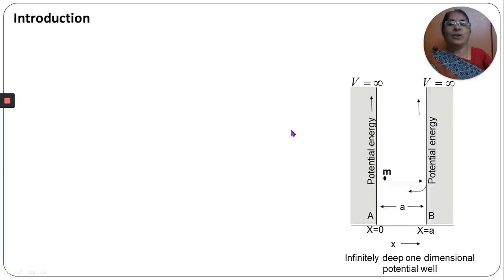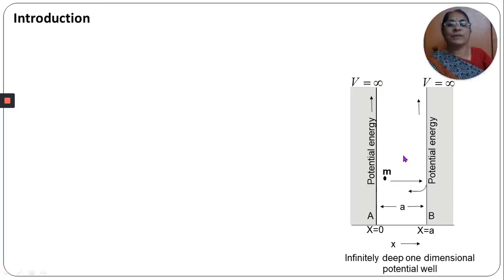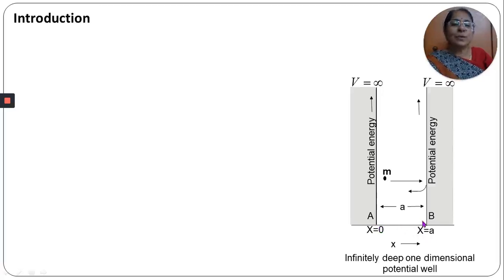Let me define what is called a one-dimensional potential box. We have two rigid walls: wall A at x equal to 0 and wall B at x equal to a. These two walls are so rigid, the heights of the walls are infinity, and they are impenetrable. The width of the box is a, which is very small compared to its height, so we call this a one-dimensional potential box.